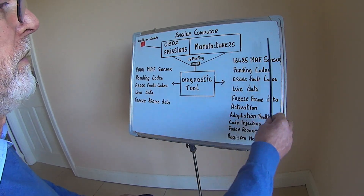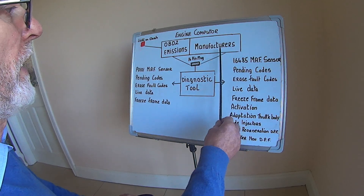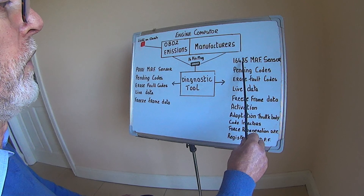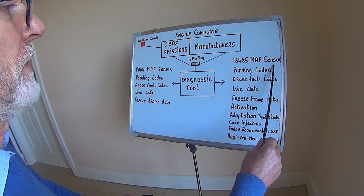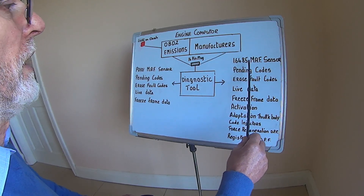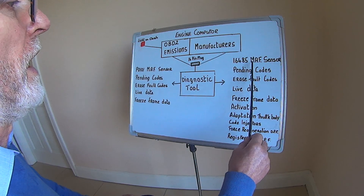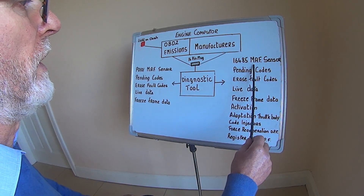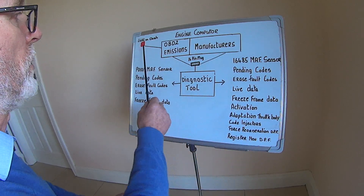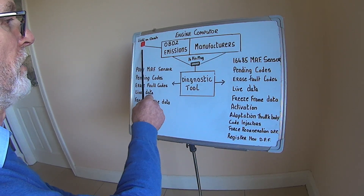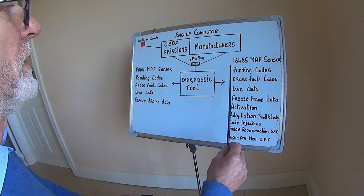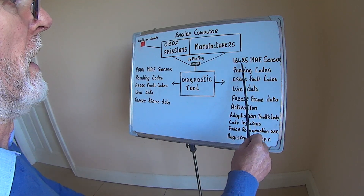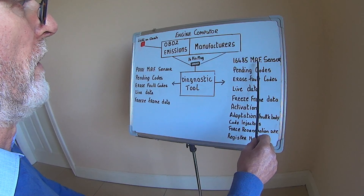So this is the information we received from the manufacturer's side of the computer. Here we have our 16485 mass air flow sensor fault. Now you can get emission-related codes here, and you can get codes that are not related to emissions — codes that will not turn on the engine management light in the dash. So if you have a fault in the system and you don't see any light on the dash, go into the manufacturer's side and see if there are codes on that side of the computer.